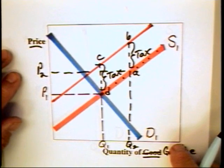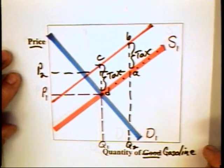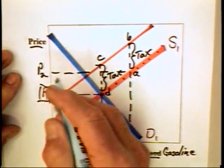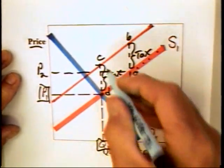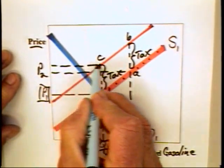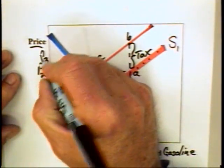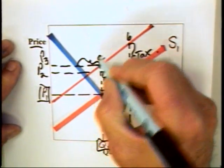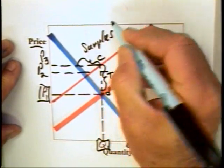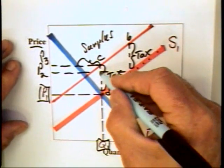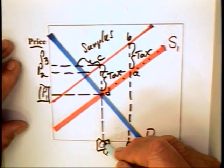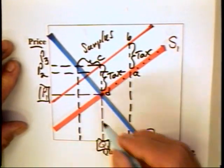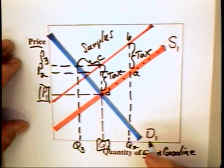Now, if the producers try to pass the tax along at the initial equilibrium, that is, they're selling initially at price P1 quantity Q1, then they would try to charge a price equal to P3. But in doing that, they will create a surplus equal to this amount. The reason we have a surplus is that the quantity supplied that producers are willing to offer is Q1. The quantity demanded is now going to be equal to Q3.